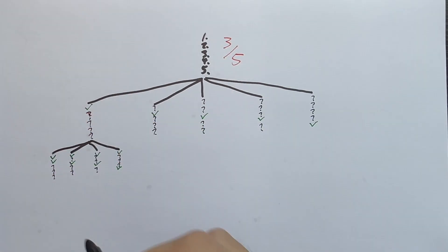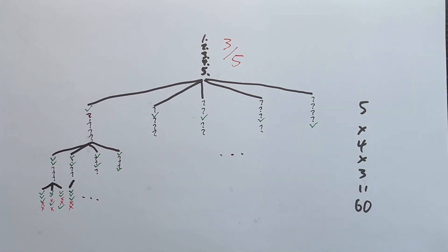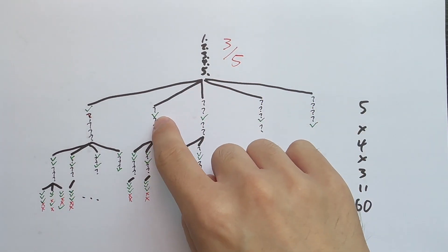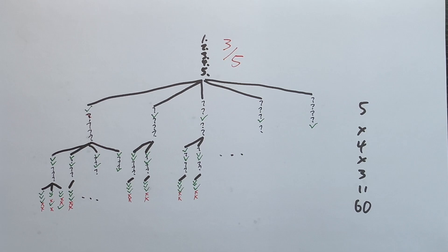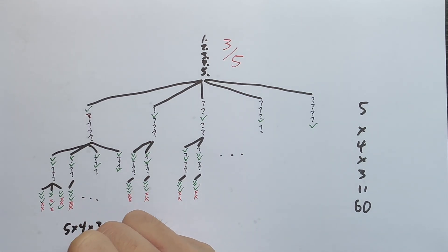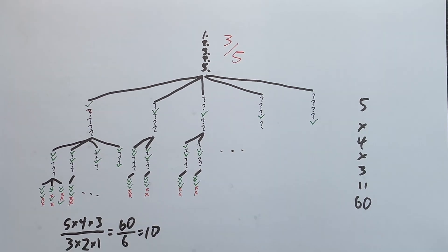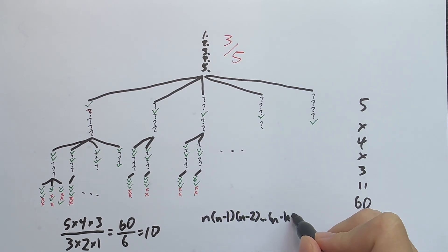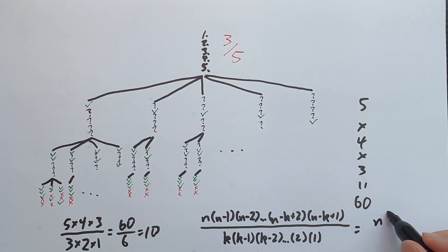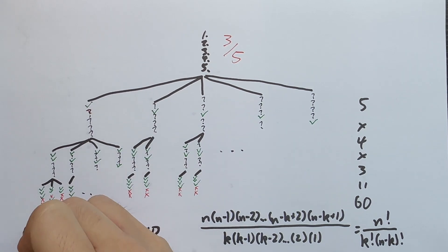How many ways can we get 3 out of 5? We choose three questions to be correct: 5 choices for the first, 4 for the second, and 3 for the third — that's 5×4×3 total. But again we've overcounted, since the same set of three correct questions can be chosen in 3×2×1 different orderings. So we divide: 5×4×3 divided by 3×2×1. In general, for choosing k correct out of n questions, that's n×(n−1)×…×(n−k+1) divided by k×(k−1)×…×1. This formula is written as n choose k.